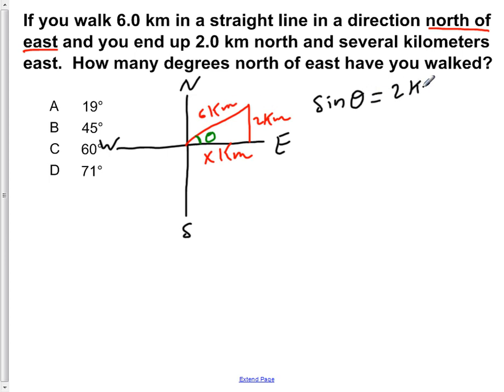which would be two kilometers over six kilometers. If we were to use cos or tan, we would first have to use Pythagorean theorem to solve for x, and then we would use one of the cos or tans. So it's easier just to use the sine,